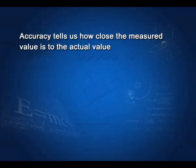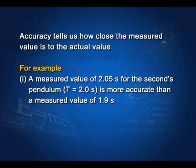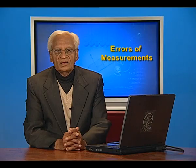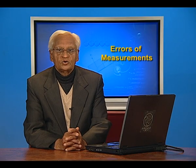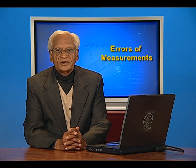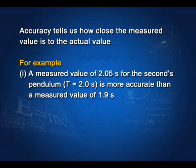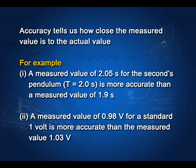Accuracy tells us how close the measured value is to the actual value. For example, a seconds pendulum has a time period equal to 2.0 seconds. A measured value of 2.05 seconds is more accurate than a measured value of 1.9 seconds — you can see that 2.05 is closer to 2.0. Similarly, a measured value of 0.98 volt for a standard 1 volt is more accurate than the measured value 1.03 volt.